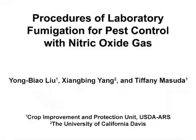The overall goal of this video is to present the use of nitric oxide fumigation for post-harvest pest control and demonstrate how to measure residues on the fumigated products. Nitric oxide is a new fumigant for post-harvest pest control. However, because of its reactive nature with oxygen, nitric oxide fumigation must be conducted under ultra-low oxygen conditions and has a stringent requirement on fumigation procedures.